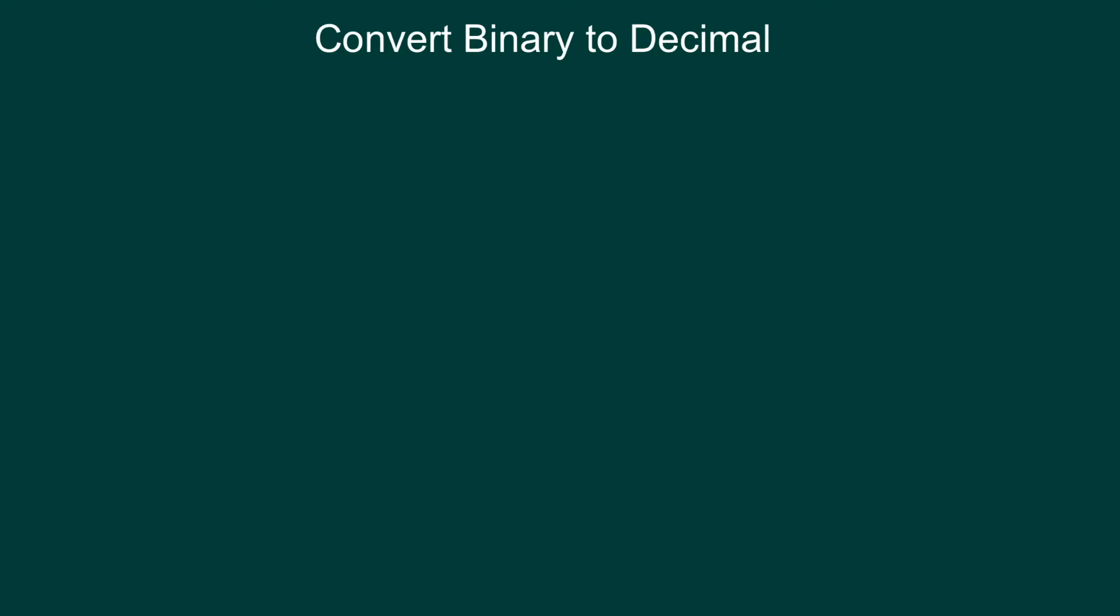In this video I'm going to show you how to convert any binary number to a decimal number. So we'll start off with an example and we'll use the number 1101101.